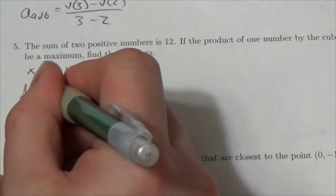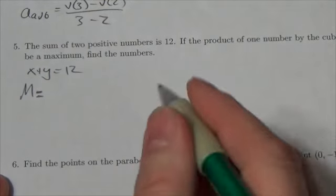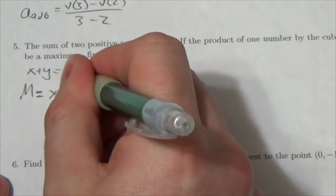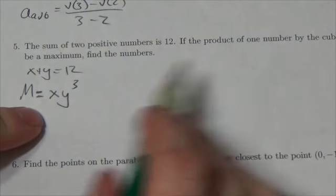This is going to be the maximum value of what we're seeing here. That's going to be x times y cubed, to say the product of one number by the cube of the other.